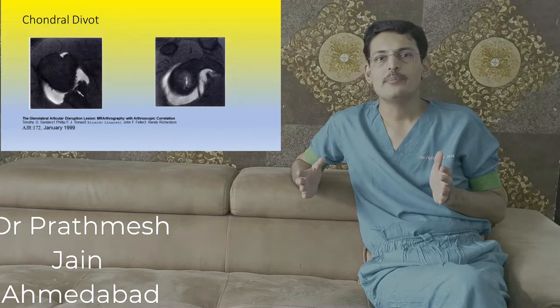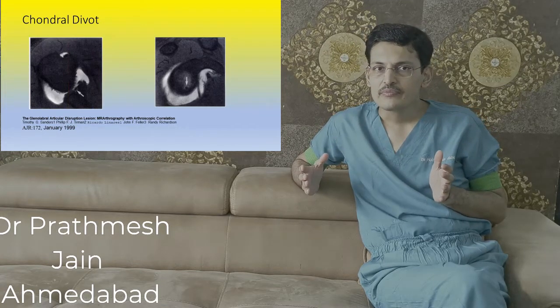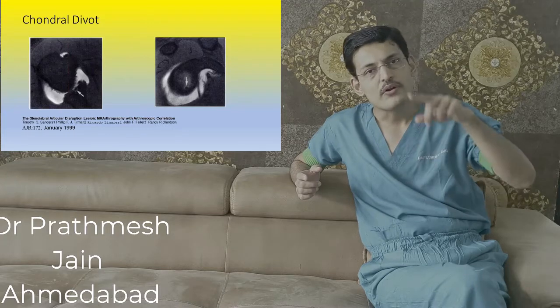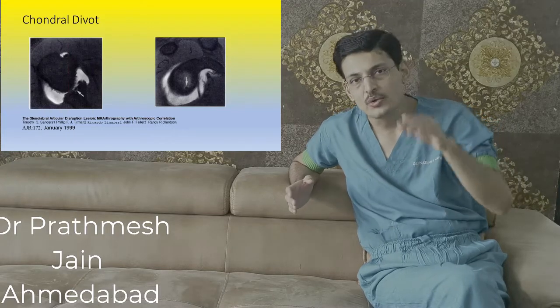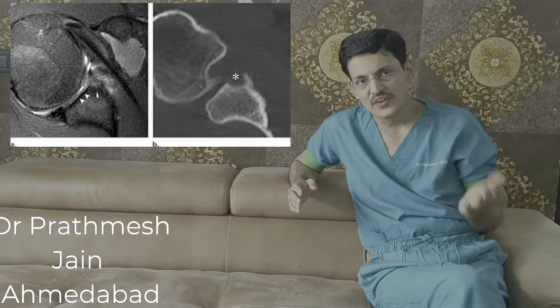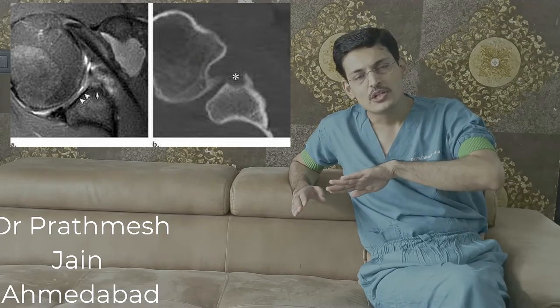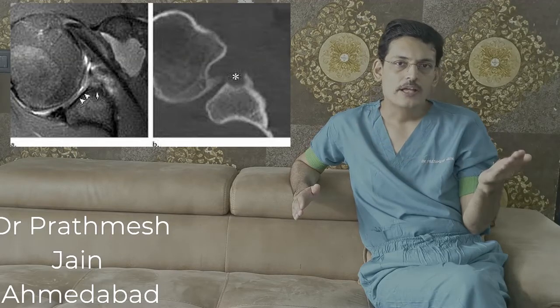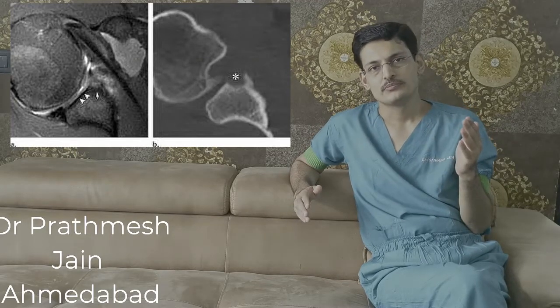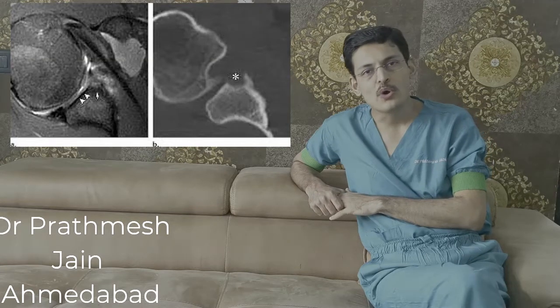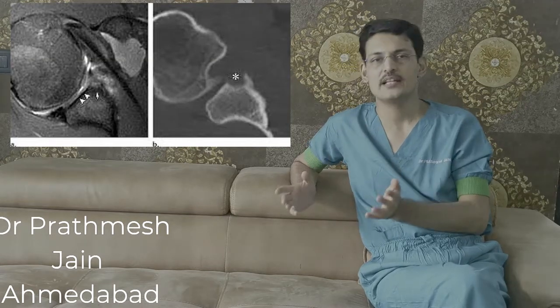This defect can be a small defect — a punctate or oval chondral lesion on the anterior inferior part of the glenoid — or it can be a large flap kind of lesion in which the whole cartilage flake is expelled from the glenoid. Occasionally, it may be accompanied by loose bodies inside the shoulder.